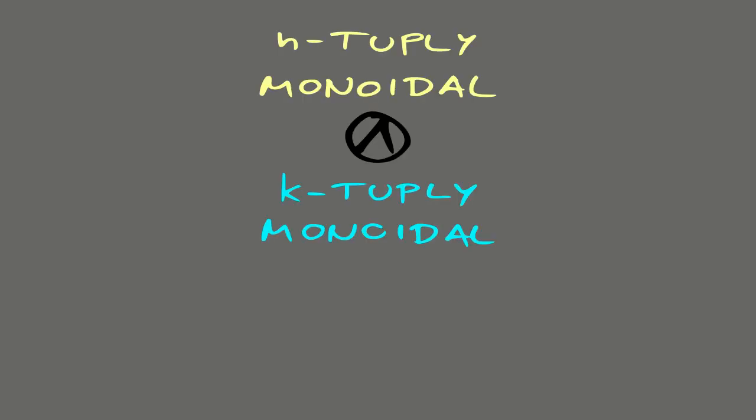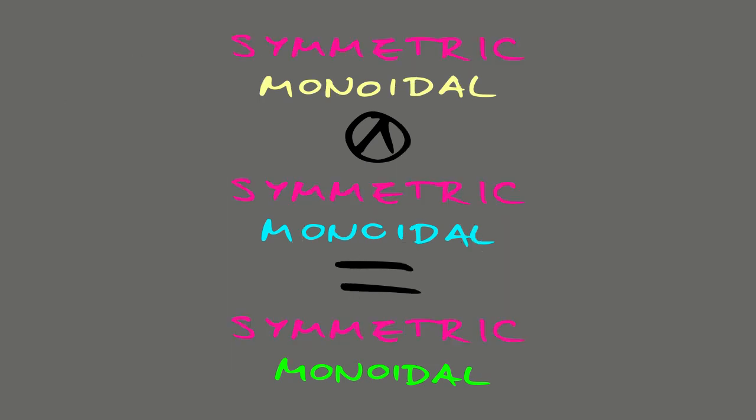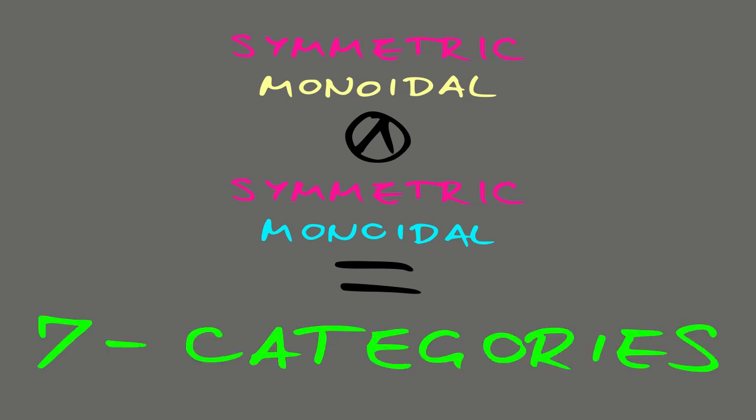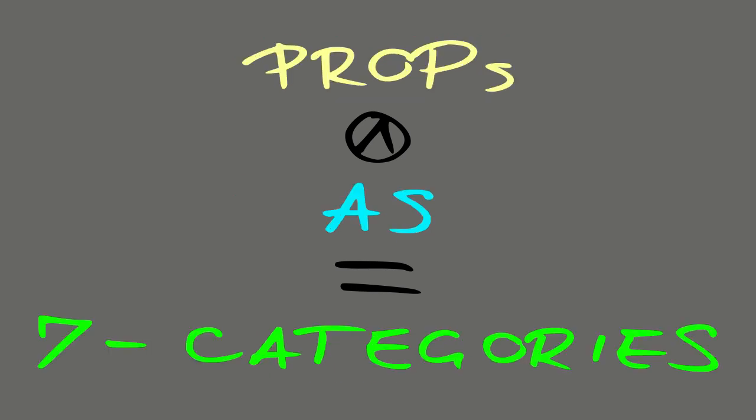More in general, the idea is that the smash product of an n-plus-2-semimonoidal theory with a k-plus-2-semimonoidal theory produces an n-plus-k-plus-2-semimonoidal theory. This eventually stabilizes to symmetric monoidal, and we could in principle recover the tensor product of props directly. That would require identifying props with an explicit model of seven-dimensional categories, and it's not something I want to do.